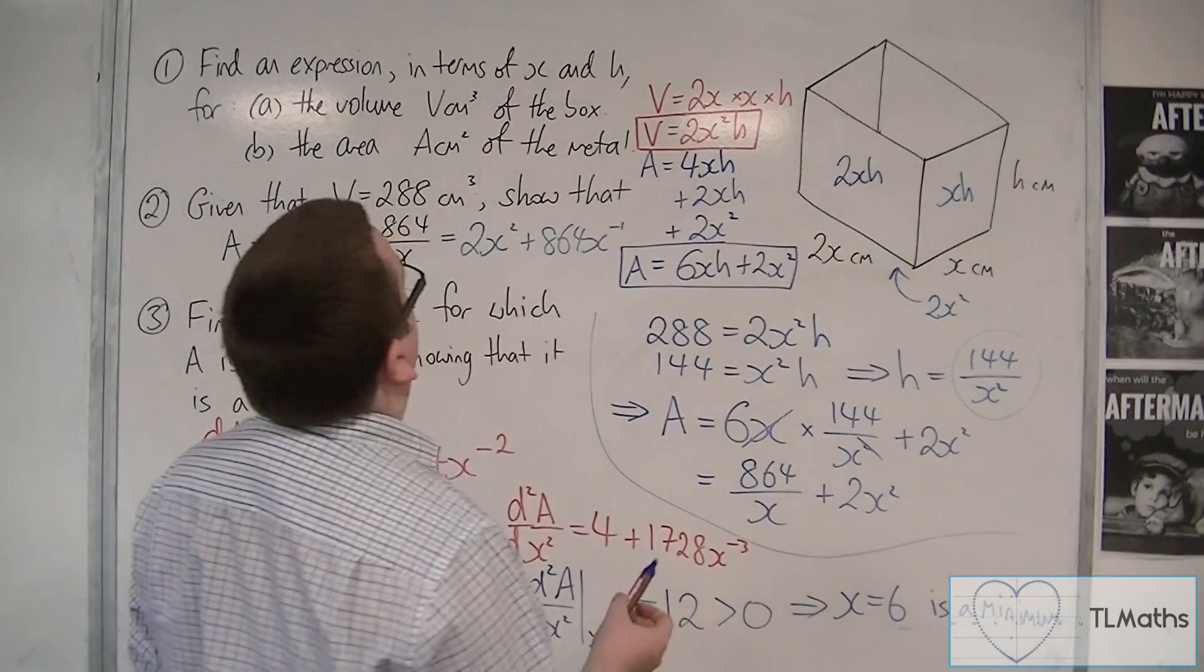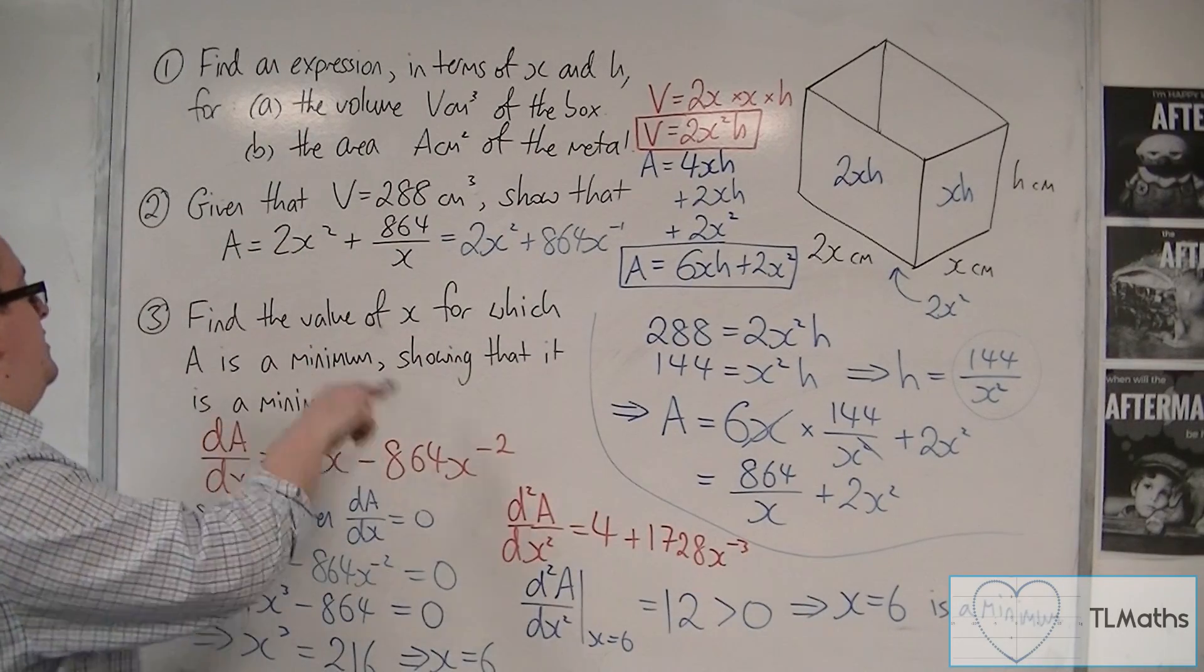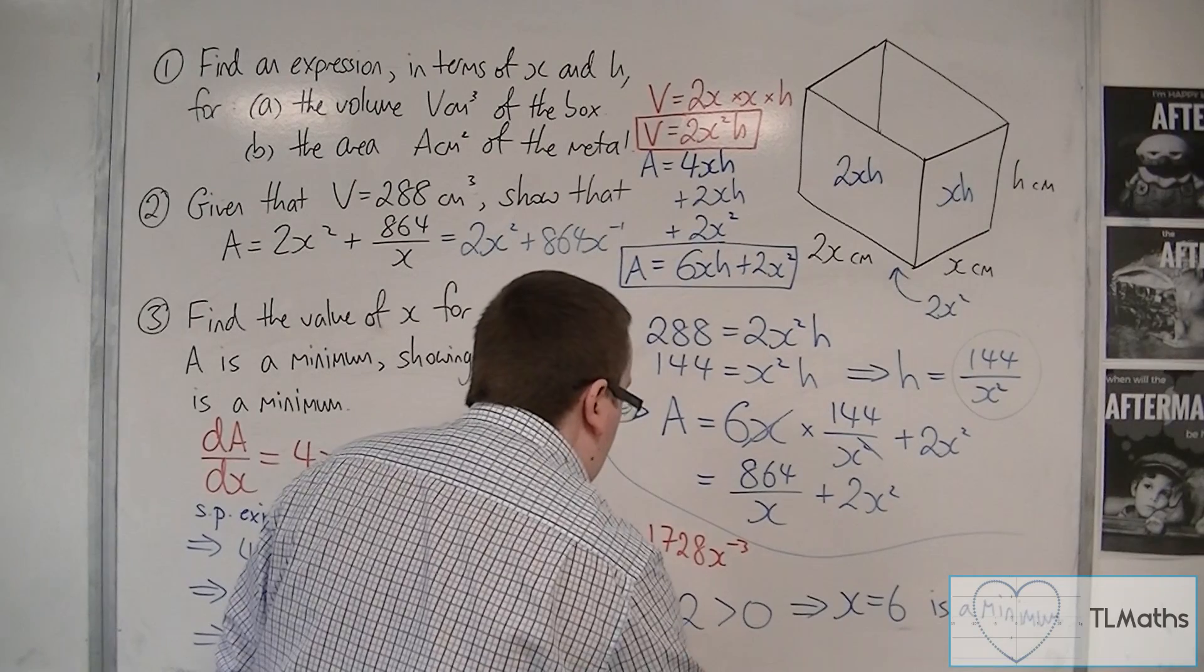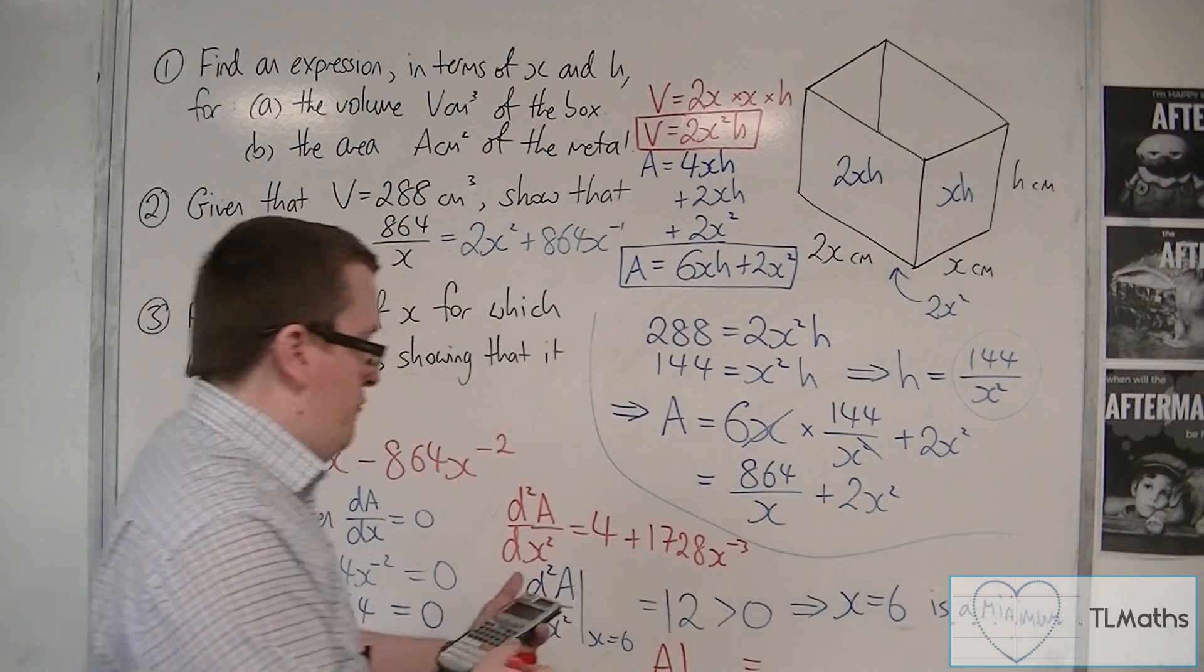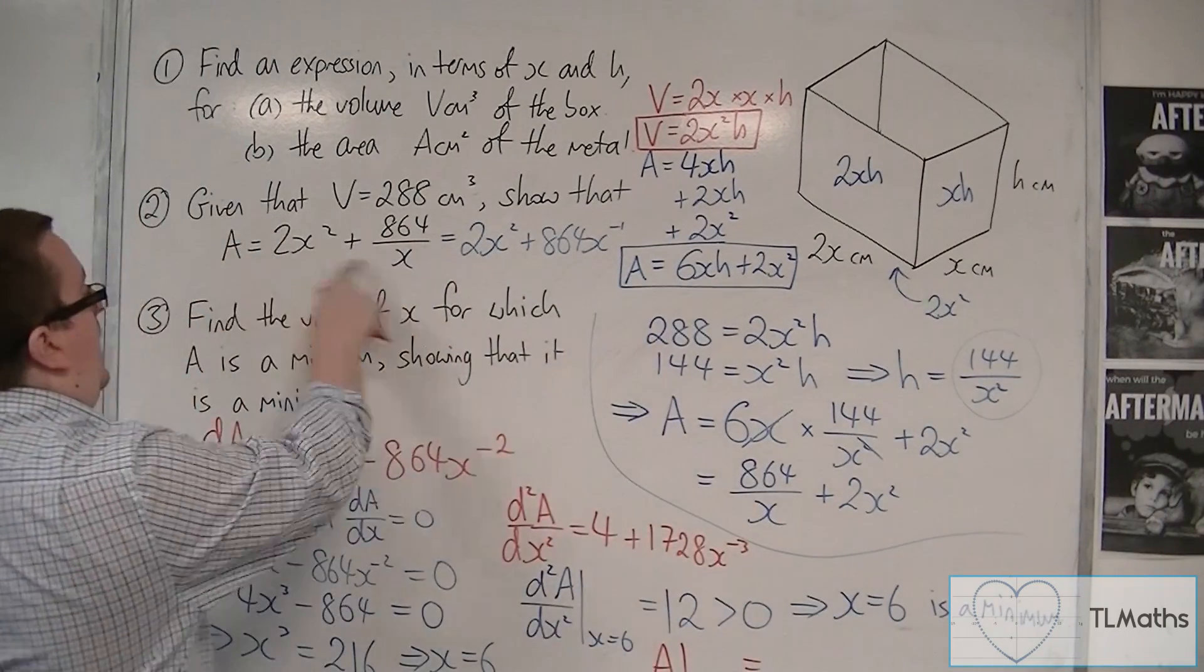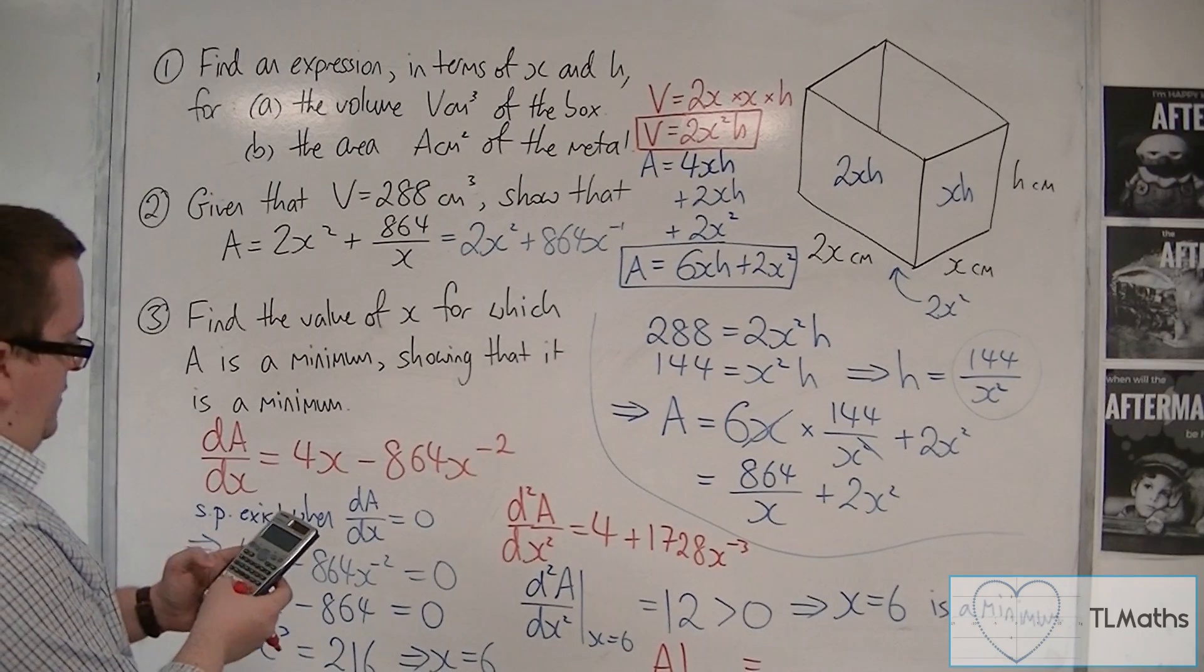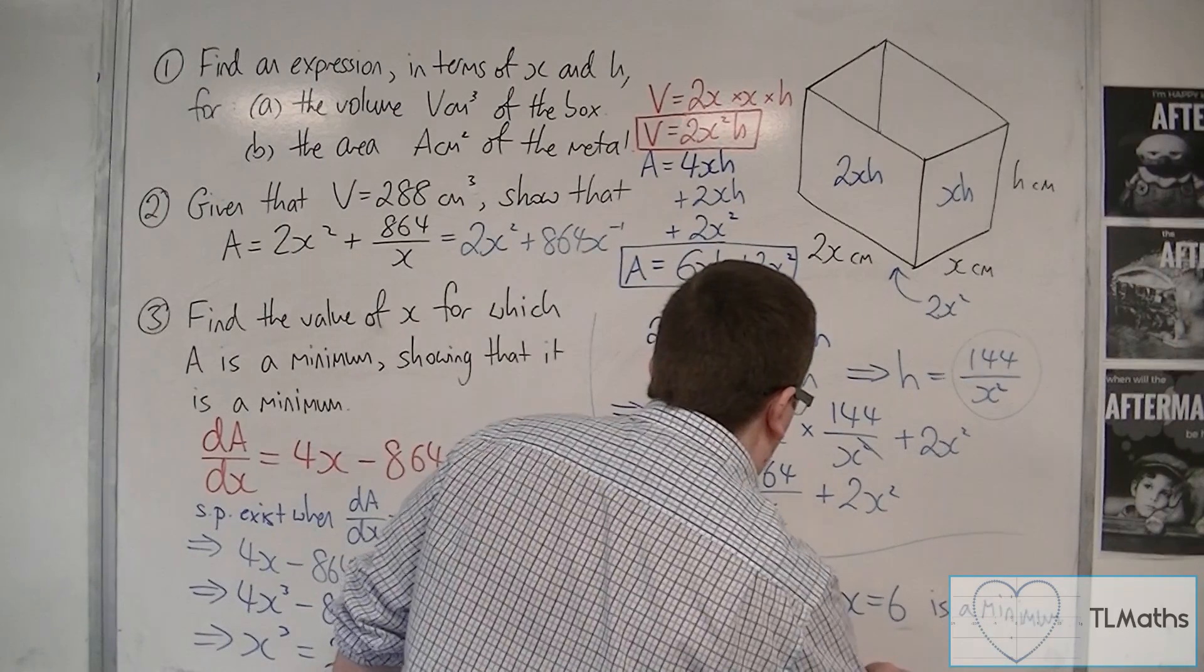Now, it makes sense that once we're there, we find that minimum area. We might as well finish that problem off. And so, when x is 6, the area, the minimum area that I get, substituting x is 6 into A, is 2 times 6 squared, plus 864 divided by 6. And that's 216, and that's 216 centimeters squared.